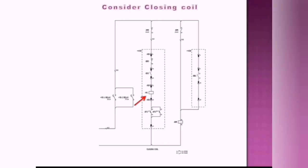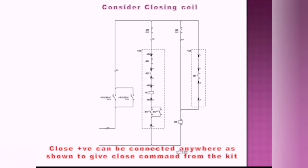Let's consider a closing coil. Here MC is a closing coil. Close positive can be connected anywhere as shown to give close command from the kit.